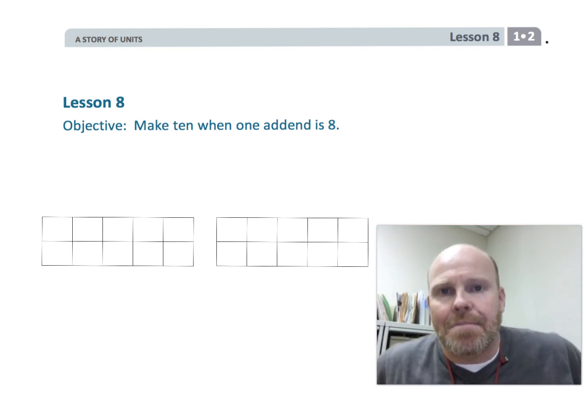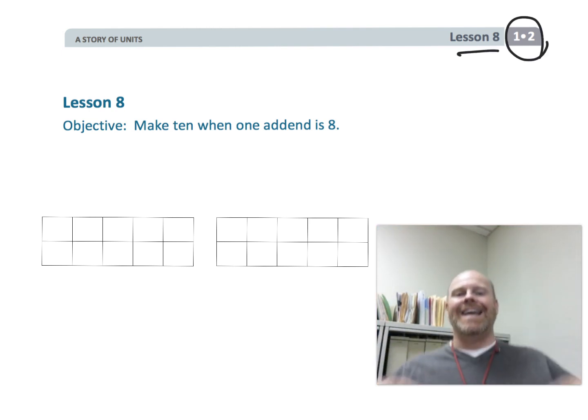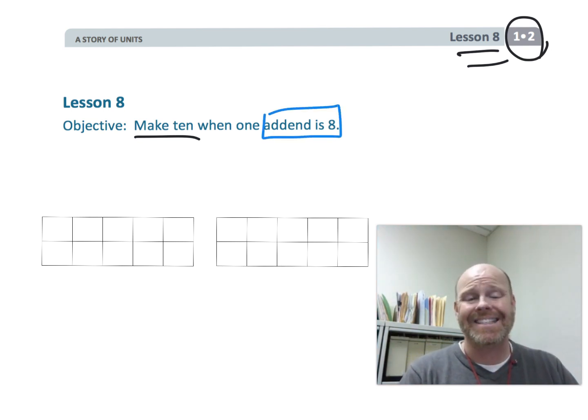All right, this is first grade module 2 lesson 8. In this lesson we're continuing to have our students make that friendly number 10. They're continuing to make 10 and they're continuing the previous lesson with one of the addends being 8. I'm going to provide additional scaffolding by using actual 10 frames rather than having my first graders simply put dots in rows of five as they call them five groups in Eureka Math.